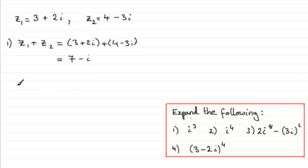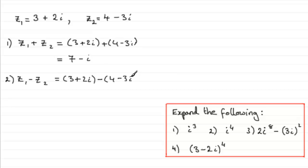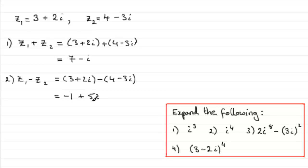And if it came to subtracting them, let's put this as the second example: Z1 minus Z2. Well, it's just going to be 3 plus 2i minus 4 minus 3i. So we end up with 3 minus 4, which is minus 1, and then 2i minus minus 3i becomes plus 5i. We don't tend to write the positive term first — we always write the real part first, whether it's positive or negative. So it's not a good idea to turn this around. Just leave it like that.